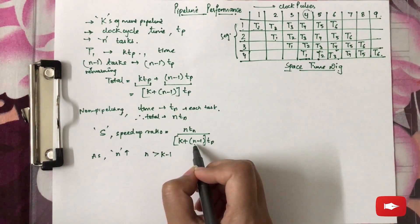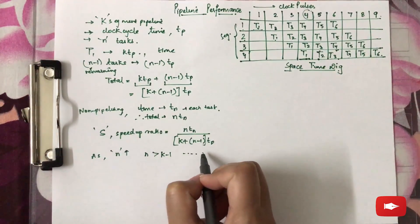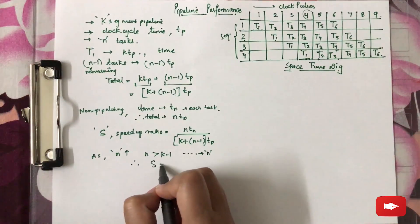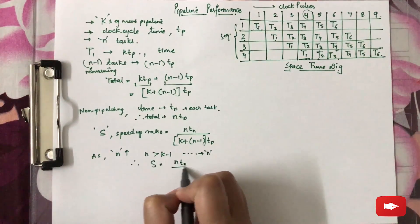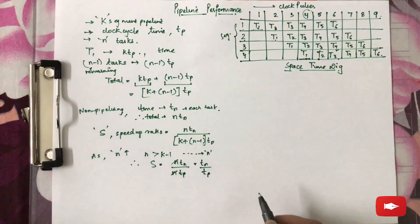If we increase the value of N, it will be somewhere very large from K minus 1, which will tend towards N. Therefore, S will be equal to N×TN upon N×TP, which will result in TN upon TP.